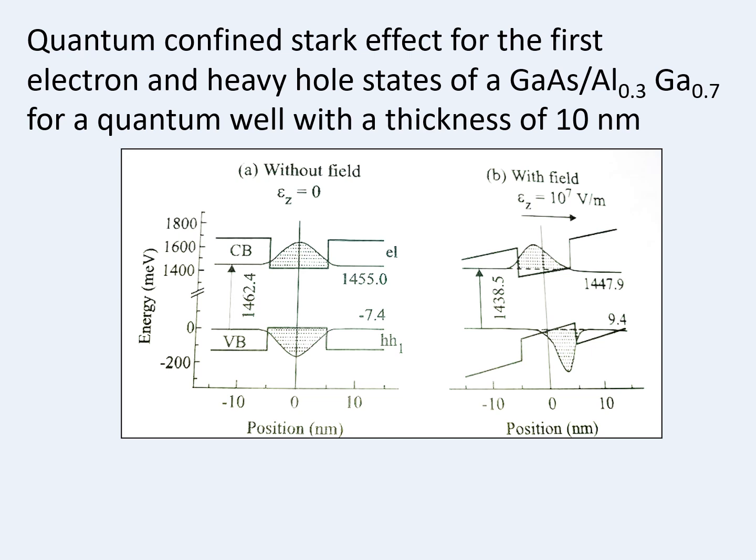In the without-field picture, you can see the conduction band and valence band. Inside them, you can see the electron and hole wave functions. The transition shown is between heavy hole 1 (marked as HH1) and electron (marked as EL). At this point, you should know what heavy hole means, so let us look at one more picture and then come back to this slide.